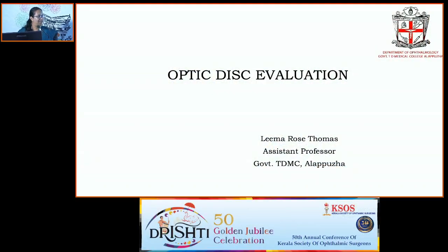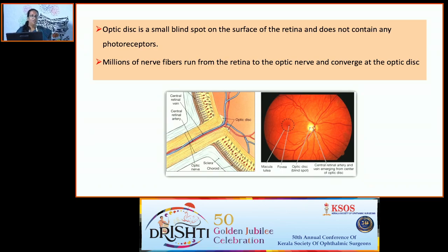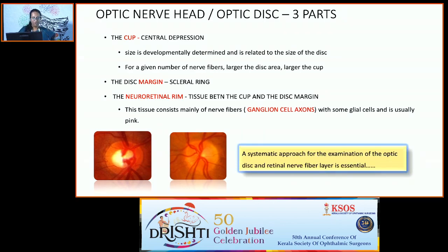Good evening everyone. The optic disc is a small blind spot on the surface of the retina. It does not contain any photoreceptors, and the millions of fibers originating from the ganglion cells travel to the brain through the optic nerve. The optic nerve head has three parts: the cup, which is a central depression whose size is genetically determined; the disc margin, denoted by the scleral ring; and the neuroretinal rim, which is the tissue between the cup and the disc margin, consisting mainly of nerve fibers and glial cells, usually pink.